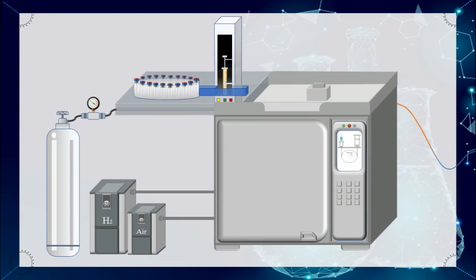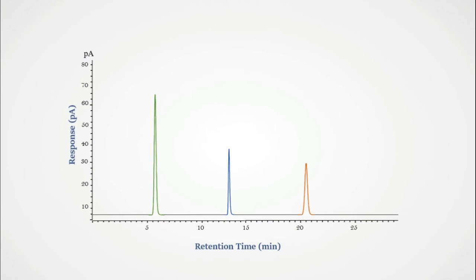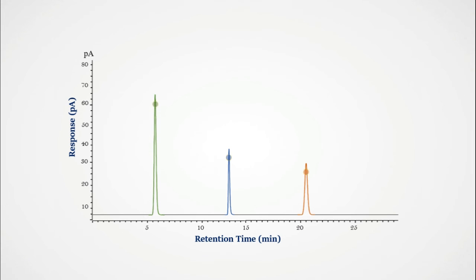The manner in which the final data is displayed is based on the computer and software. The number of peaks present can indicate how many components are in the mixture. Usually, the x-axis of the gas chromatogram shows the amount of time taken for the analytes to pass through the column and reach the FID detector. Typically, the y-axis, or the area of the peak, is a reflection of the amount of a specific analyte that's present.